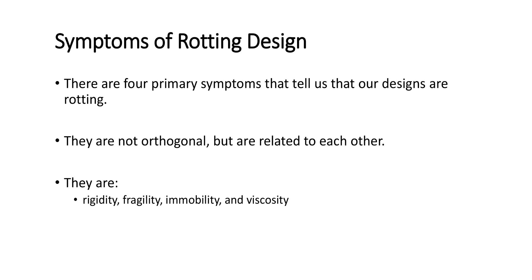There are probably four symptoms that tell us that our design is getting rotten. They are not orthogonal but are related to each other. The four parameters — rigidity, fragility, immobility, and viscosity — are not independent of each other but dependent on one another. So if something happens to one symptom, you will find the other symptoms as well in your design.